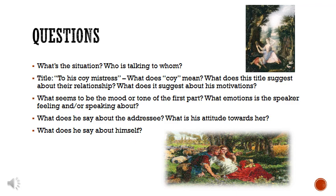What does he say about this coy mistress? What does his attitude towards her seem to be? The title tells us something — he's interested in her, perhaps attracted to her, but also feels that she is being shy. And finally, what does he say about himself? How does he position himself relative to her? How does he present himself to her? These are all questions to think about for this poem, and for any text that you're reading.